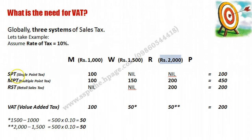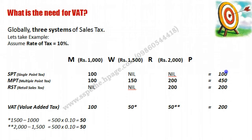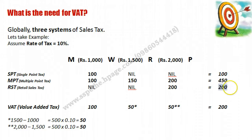Looking at the final position: Single Point Tax — government recovers Rs. 100, which is less recovery and not ideal. Multiple Point Tax — government recovers Rs. 450, which is higher and puts an extra burden on the public, so also not recommended. Retail Sales Tax — government collects Rs. 200, which is what is due since the ultimate sale is at Rs. 2000 at a 10% rate. However, this system is also not suitable because it is not practicable in India. You will see all these systems in detail.